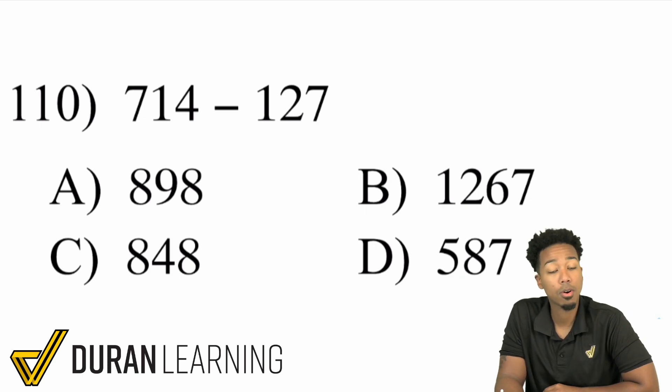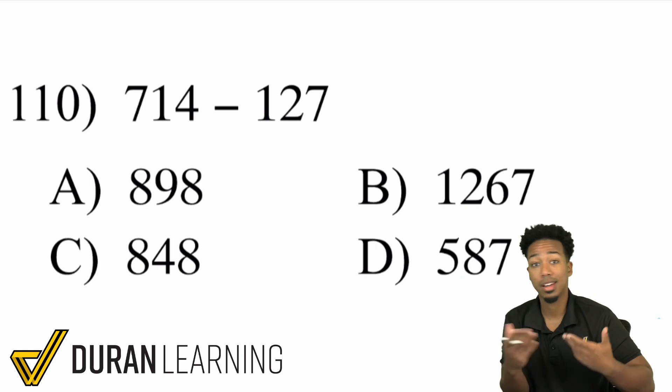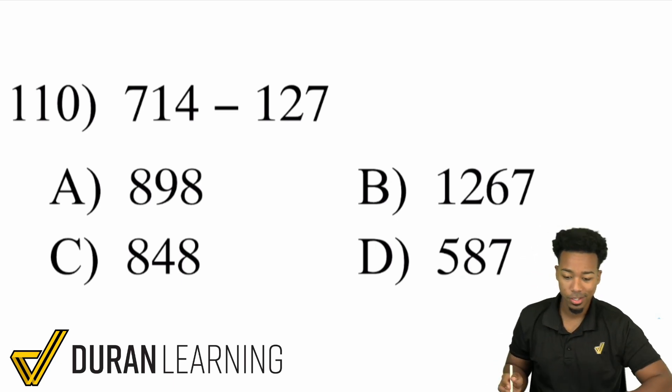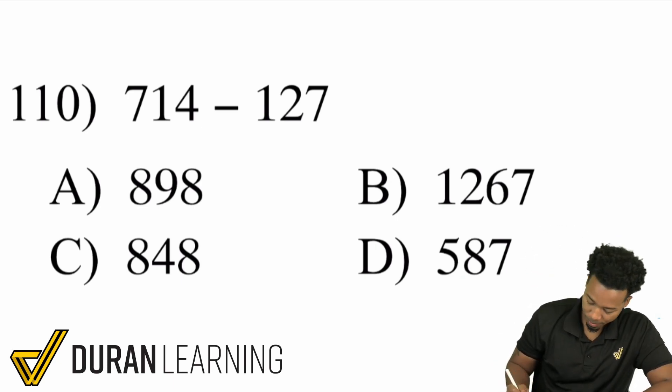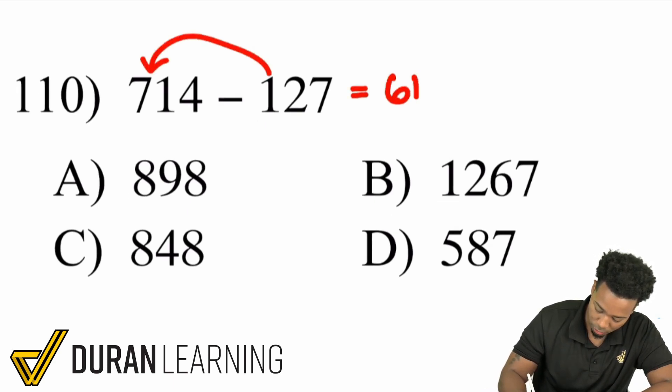What we can do here my party people is this. We can go ahead and again split and glue or estimate and compensate whichever way you want. So here's a nice way to think of it. I'm going to go ahead here and say hey let me just take away 100 first. So that's going to be 614 minus 27.